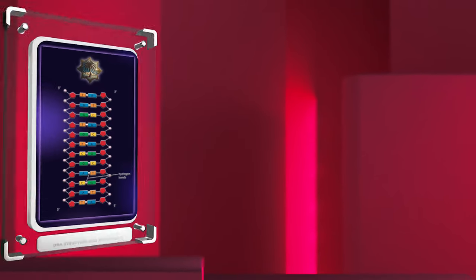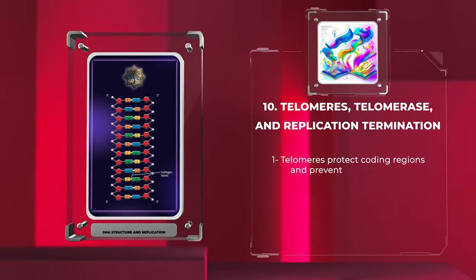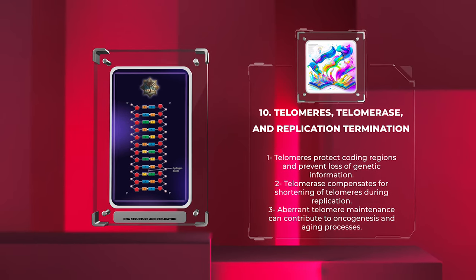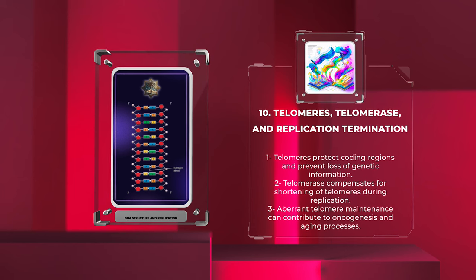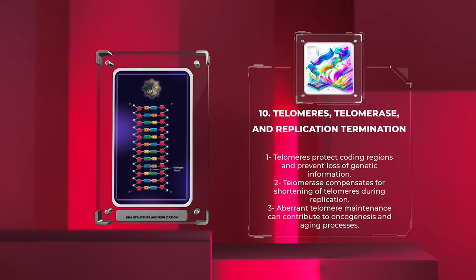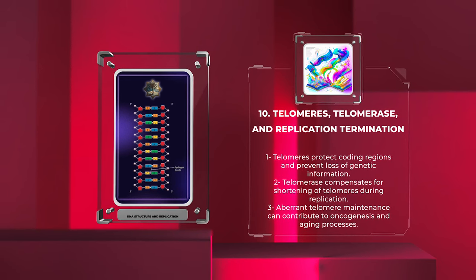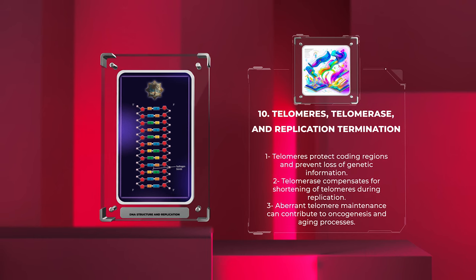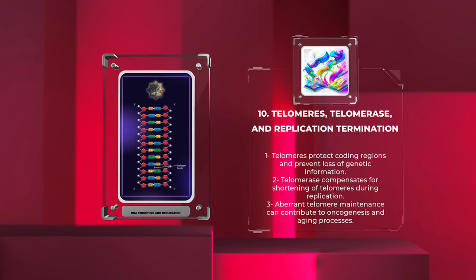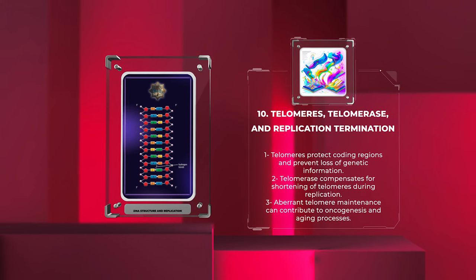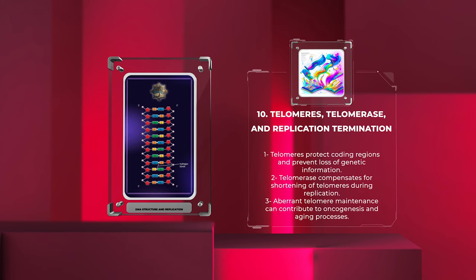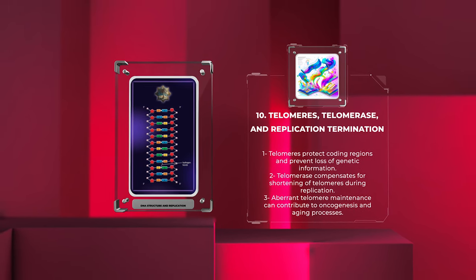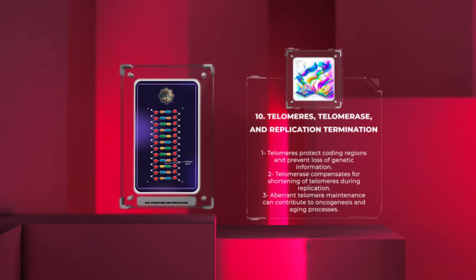Telomeres are specialized DNA structures located at the ends of linear chromosomes. They protect the coding regions of DNA from degradation and prevent the loss of essential genetic information during replication. During replication, the telomeres experience gradual shortening, which is compensated by an enzyme called telomerase. Telomerase adds repetitive DNA sequences onto the telomeres, counteracting the natural attrition during replication. However, aberrant telomere maintenance can contribute to oncogenesis and aging processes.